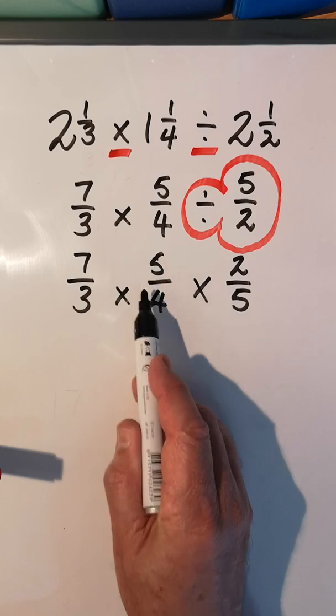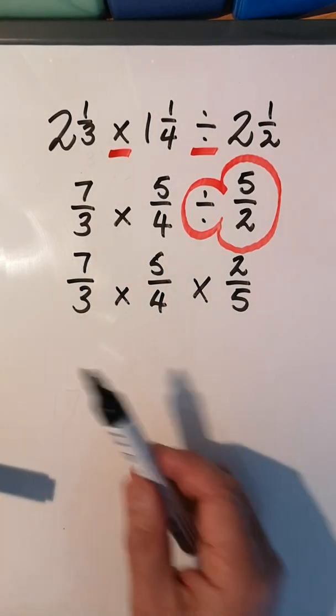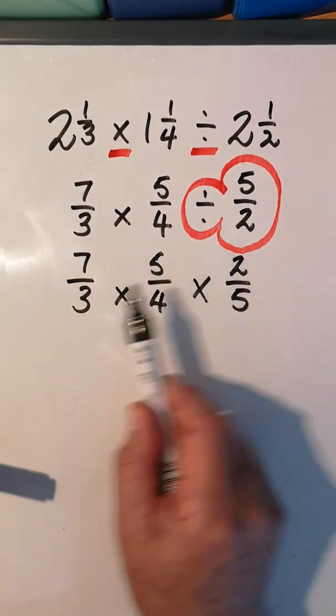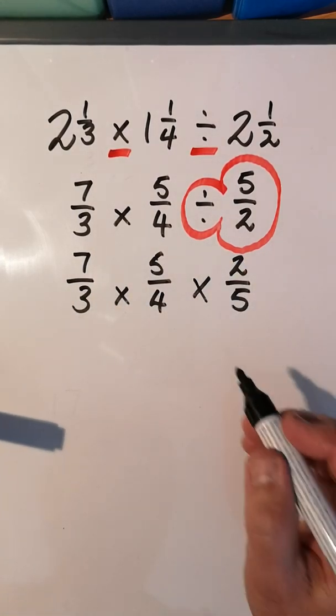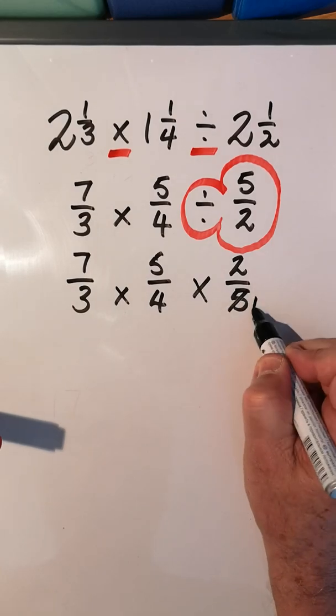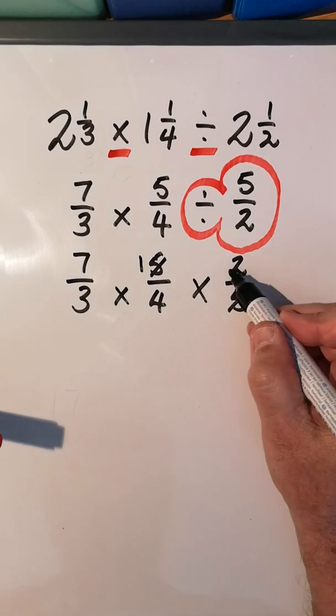Let's look: I've spotted that 5 goes into itself once, and 5 goes into itself once. Yeah, 2 goes into itself once, and 2 goes into 4 twice. Is there anywhere else? 2 and 7, 3 and 1? No.